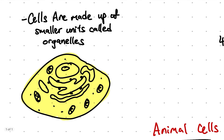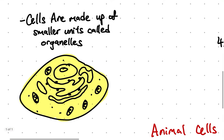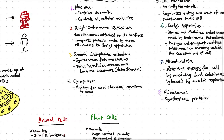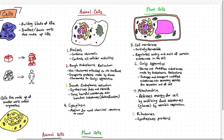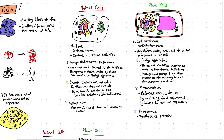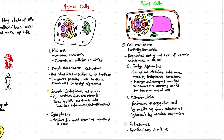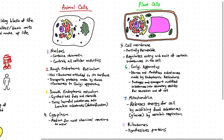A thing to take note is that cells are made up of smaller units with special functions called organelles. Let us now take a look at the difference between the animal cell and plant cell. We're going to state the organelles found in both cells first.